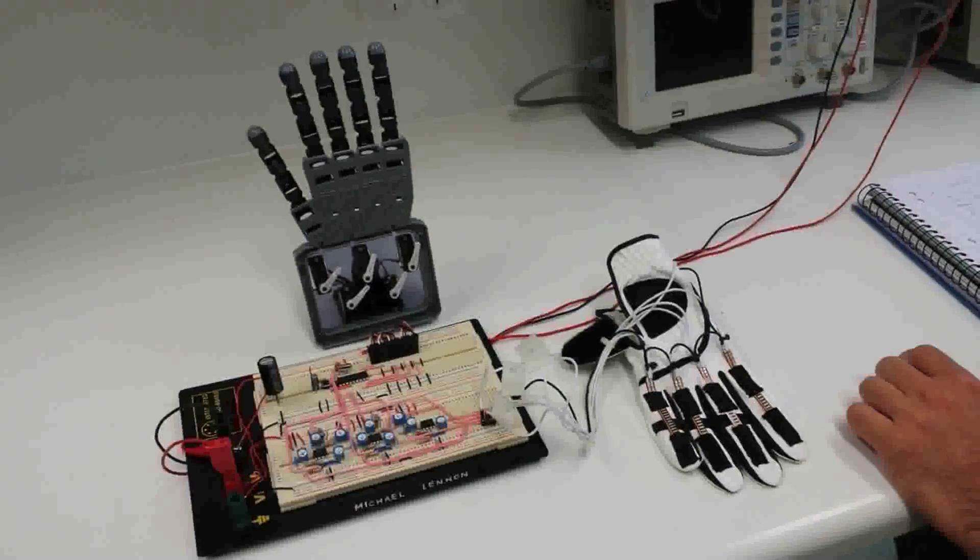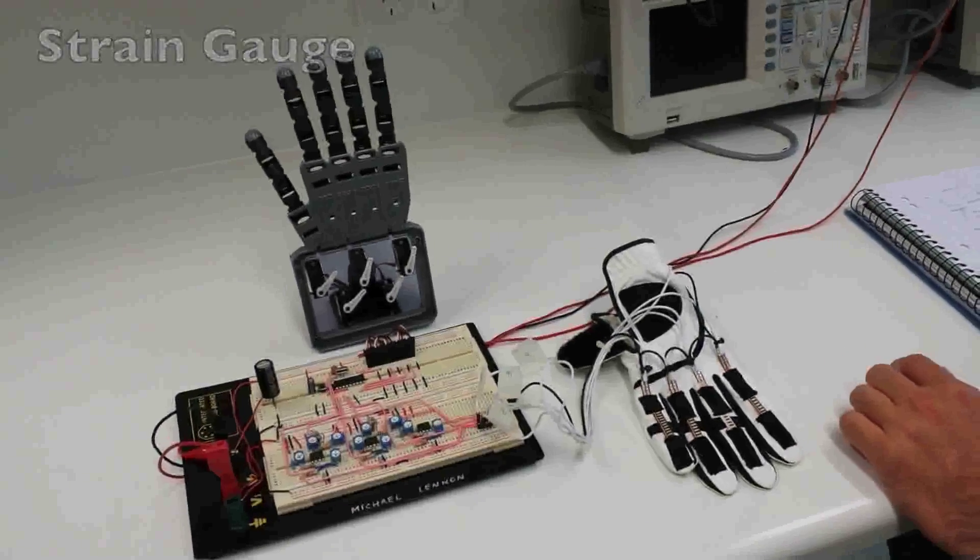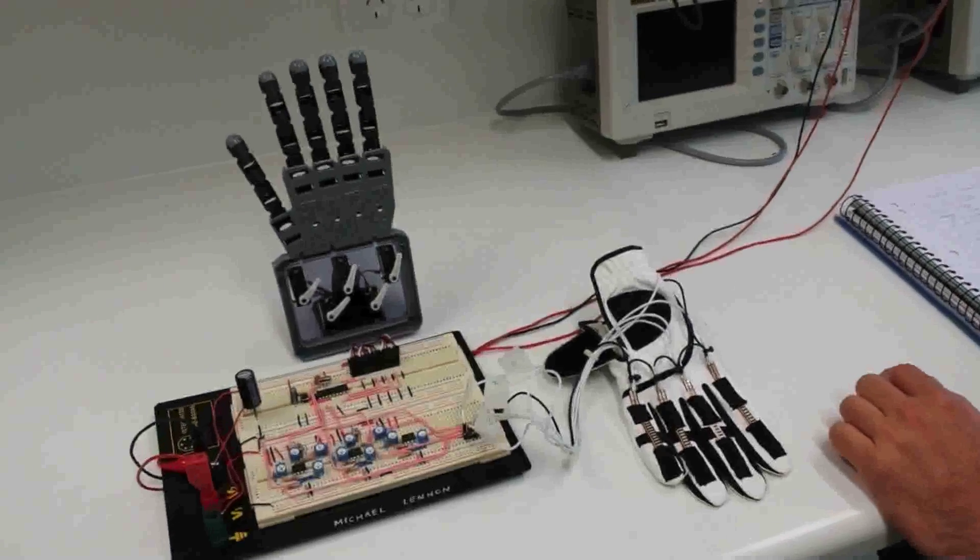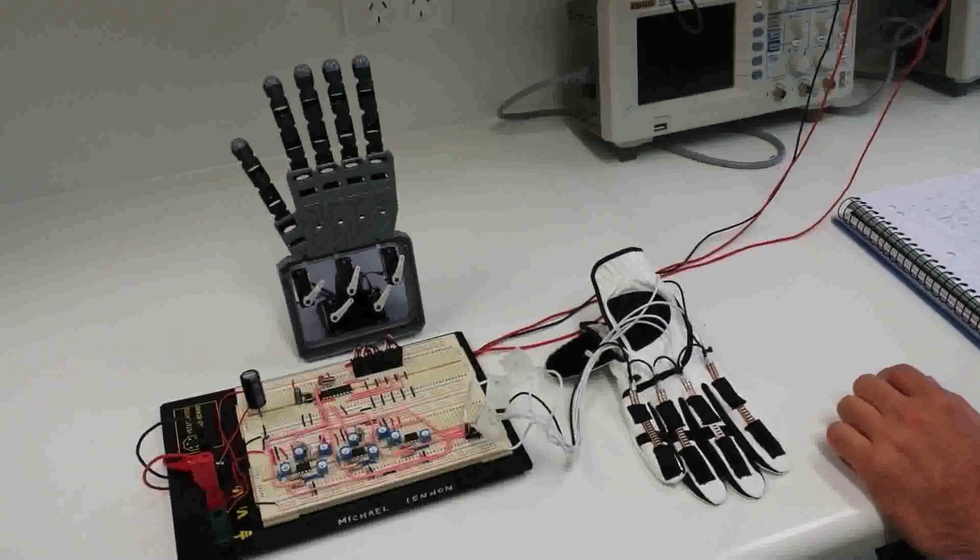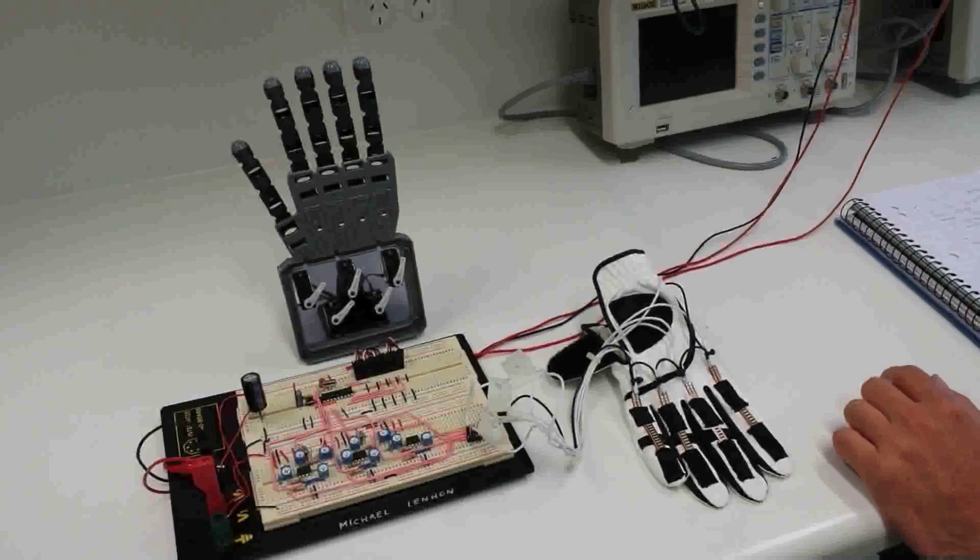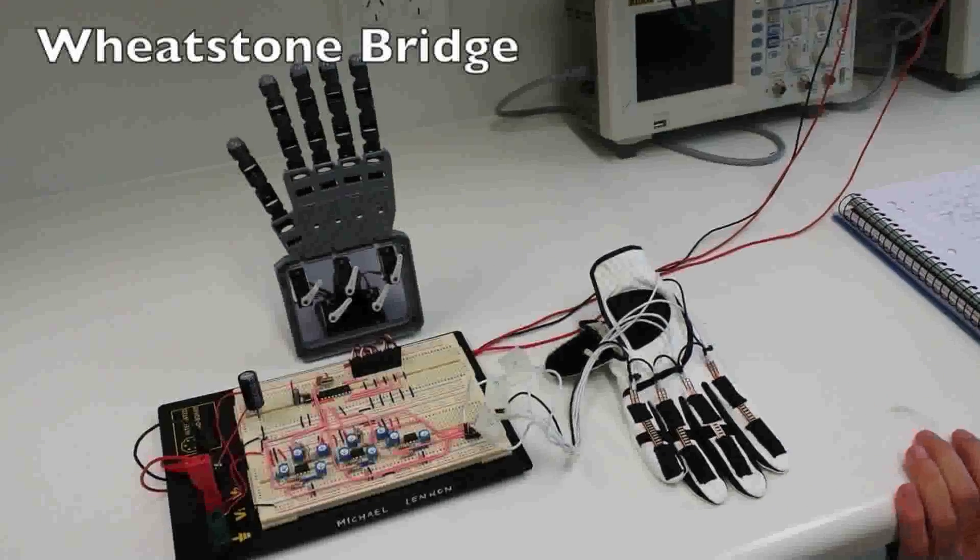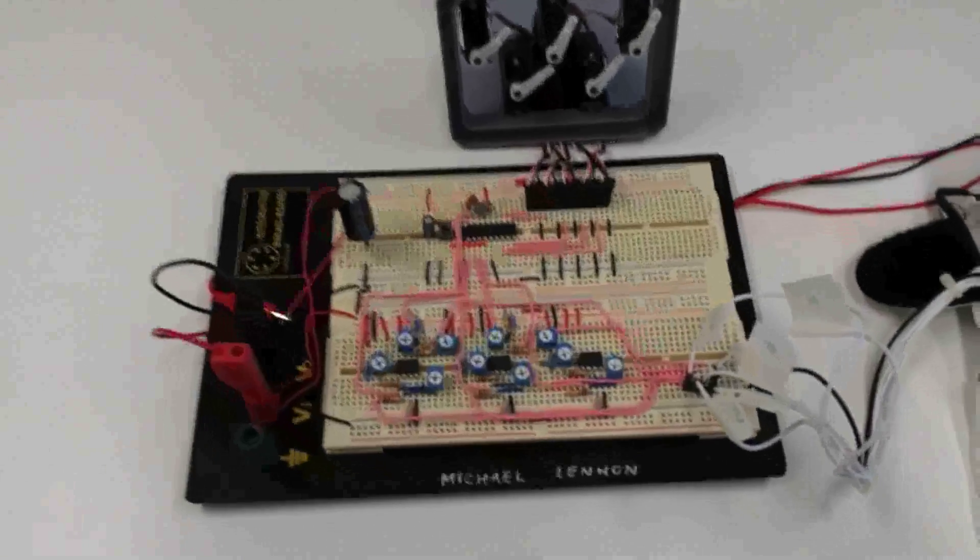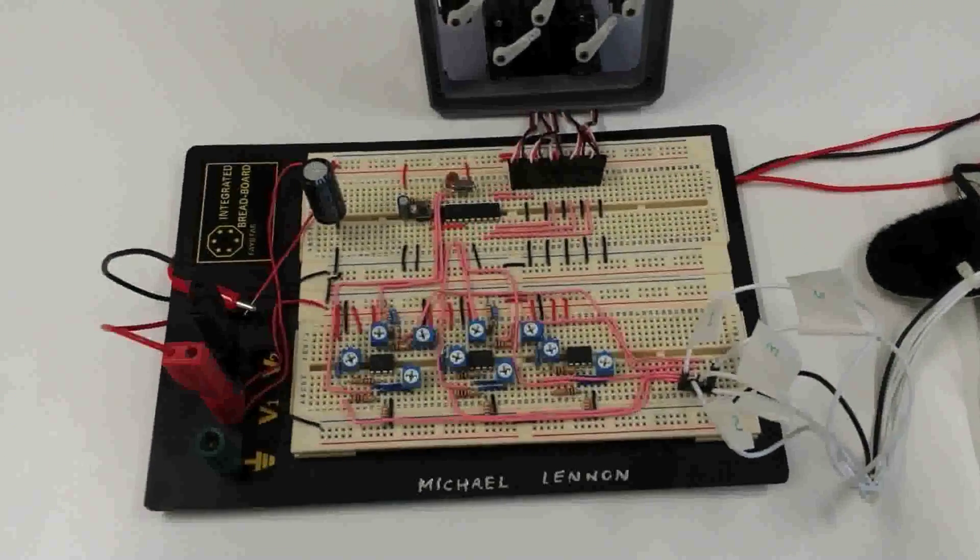Flex sensors work like a strain gauge. They vary the resistance from 25 kilo ohms to 125 kilo ohms with a range from 0 to 90 degrees. A Wheatstone bridge converts the change of resistance to a voltage. This voltage is then amplified using a difference amplifier.